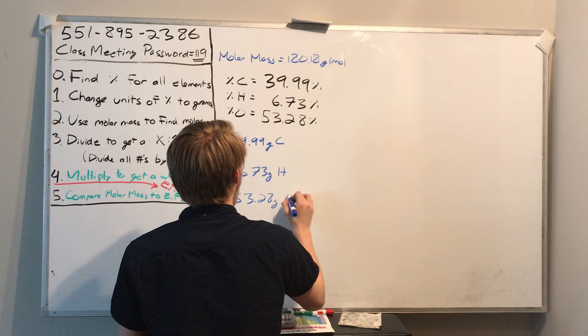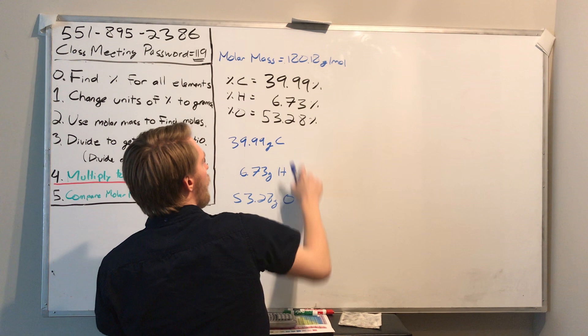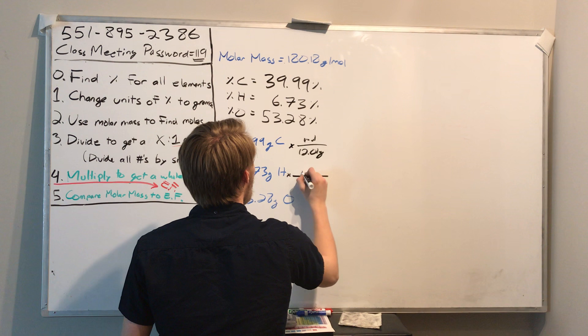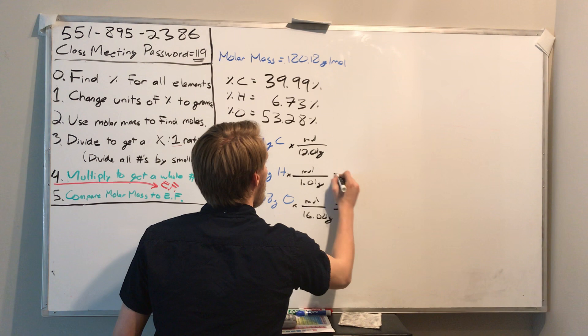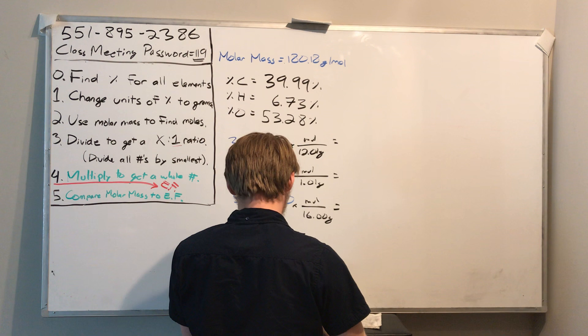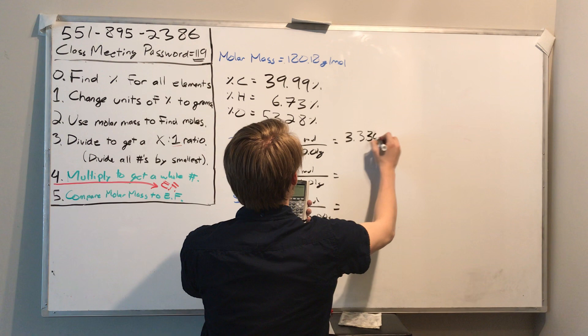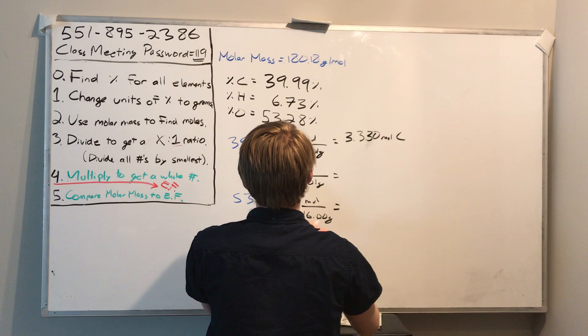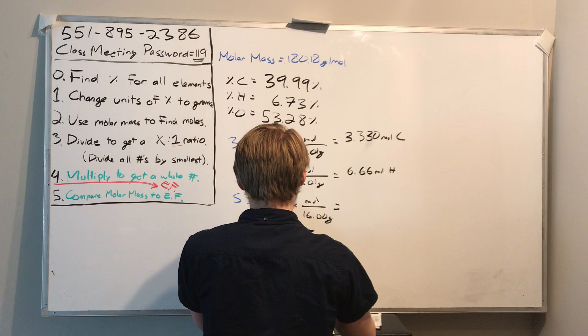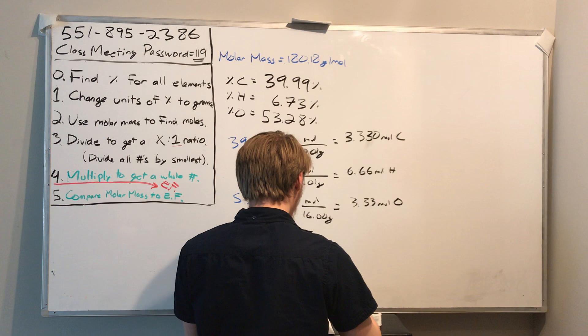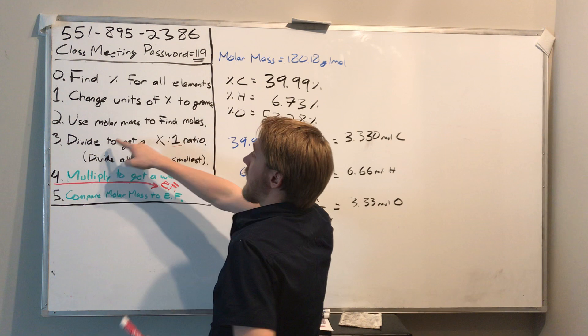Goes all that up to 100, so we know step 0 is good. We changed our percentages to grams, so step 1 is done. Step 2 is to divide by molar mass to get to moles. So we divide by 12.01 grams per mole. We divide by 1.01 grams per mole. And we divide by 16.00 grams per mole. And we get 3.32 moles of carbon, 6.66 moles of hydrogen, and 3.33 moles of oxygen. Cool. So now we have moles. Step 2 is done.